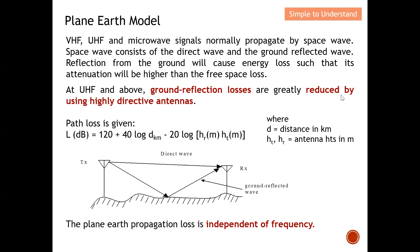At UHF and above, ground reflection losses are greatly reduced by using a highly directive antenna. When we use a very high directive antenna, we minimize the ground-reflected wave — most of the energy travels as a direct line-of-sight — and therefore we can apply the free space path loss model. In short, to resolve ground reflection loss we need a highly directive antenna to ensure we only have the line-of-sight wave.